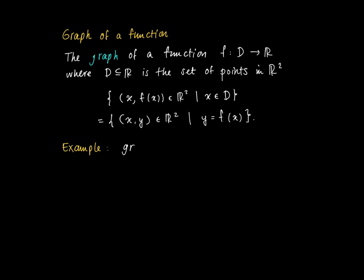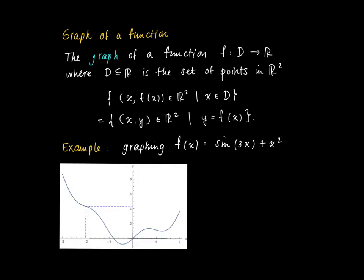So for example, we try to look at the graph f of x where f equals the sinus of 3x plus x squared. Then we usually associate to the graph some picture in R² that we find here. So we have an x axis over here, y axis over there, and any point on the graph is represented by a point in this plane.